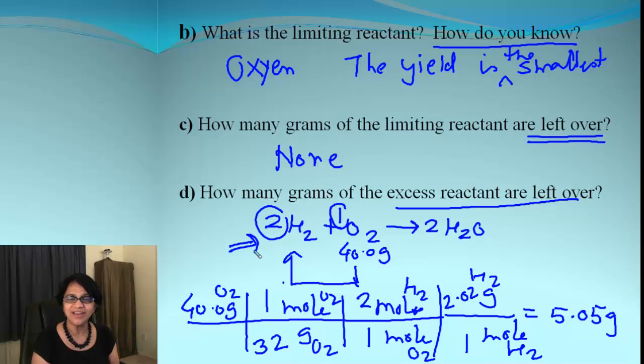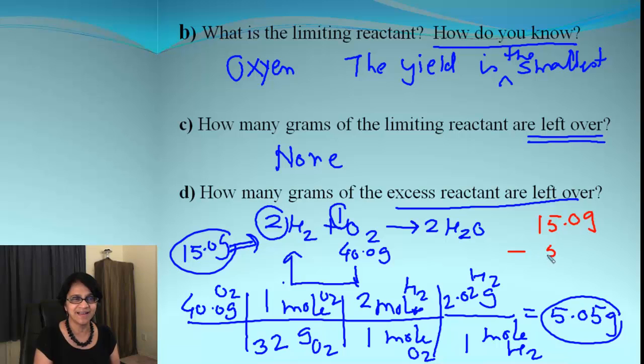Well, how much did we have before? We had 15 grams of hydrogen before. Out of that, 5.05 got used up. So how much is remaining? Simply, it is subtraction, and that gives you the answer 9.95 grams of the excess hydrogen remaining.